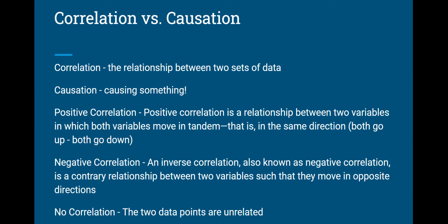We'll get some practice doing that with the activity you're working on. Positive correlations are basically relationships between two variables where both variables move in the same direction — they either both go up or both go down at the same time. For instance, if we're looking at the gross domestic product of a country, that would probably go up at the same time the literacy rate goes up. Both are indicators of development — one economic, one social — and we'd expect them to rise together.